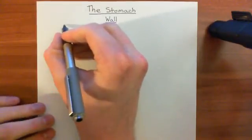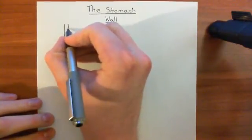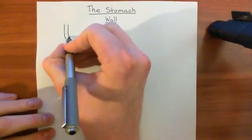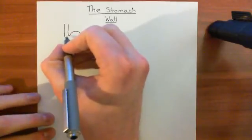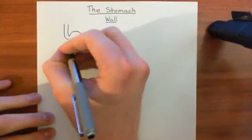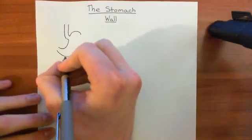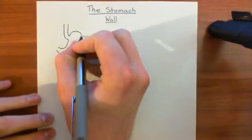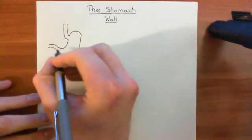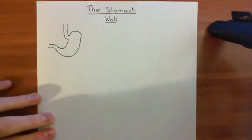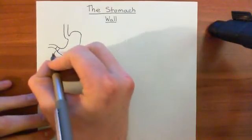The stomach is the first organ after the esophagus, so it precedes the small intestine. The esophagus comes down, and then the stomach comes off. There's a sphincter at the end of the esophagus before you go into the stomach, known as the gastroesophageal sphincter. The stomach then curves around and goes into the small bowel. There's a sphincter between the stomach and the beginning of the small bowel — the first portion of the small bowel is called the duodenum — and that sphincter is known as the pyloric sphincter.